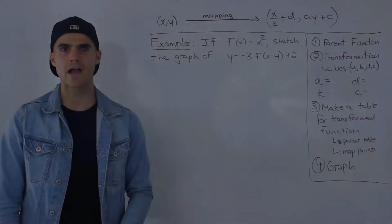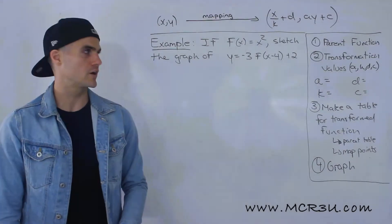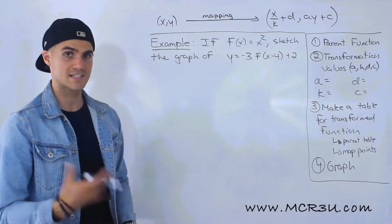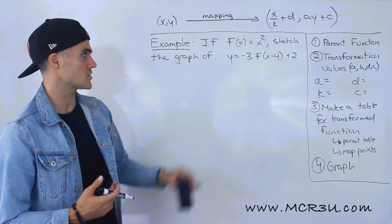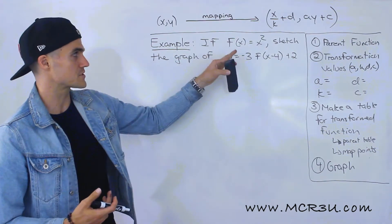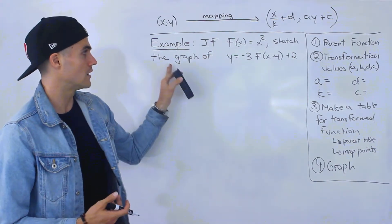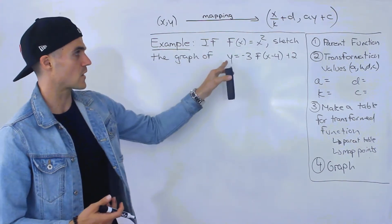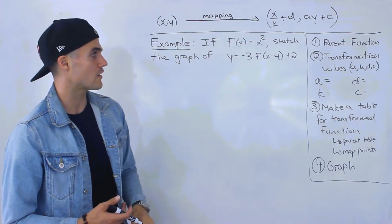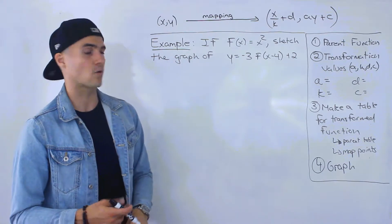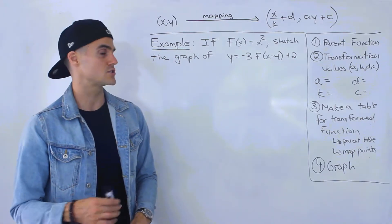Welcome back. Patrick here, moving on to the next example dealing with transformation. So if f of x equals x squared, we've got to sketch the graph of y equals negative 3 f of x minus 4 plus 2.